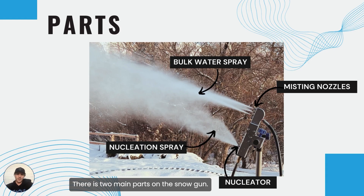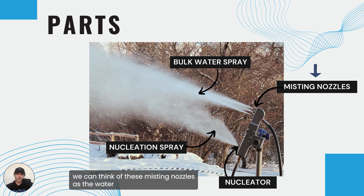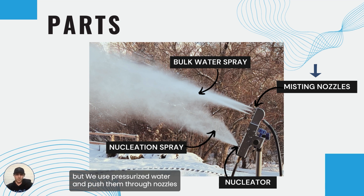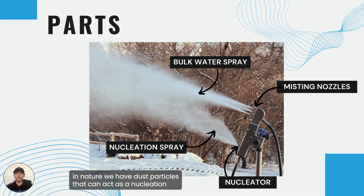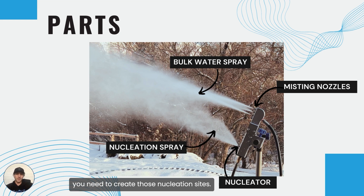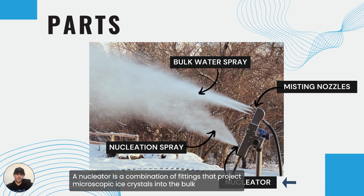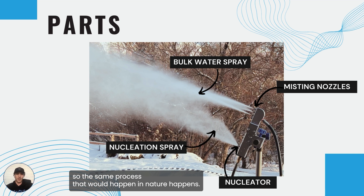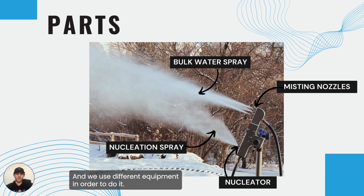There are a few different parts of a snowmaking system. There are two main parts on the snow gun: misting nozzles and a nucleator. Misting nozzles produce the bulk water spray — we can think of these as the water occurring naturally in the atmosphere as humidity. We use pressurized water pushed through nozzles to create that bulk water spray. They still need a nucleation site. In nature, dust particles act as nucleation sites. In a snow gun, a nucleator creates those nucleation sites by projecting microscopic ice crystals into the bulk water spray, which then act as nucleation sites. The same process that happens in nature happens much closer to the ground and much quicker using this equipment.